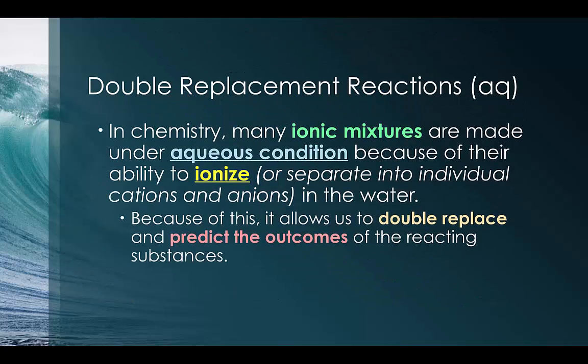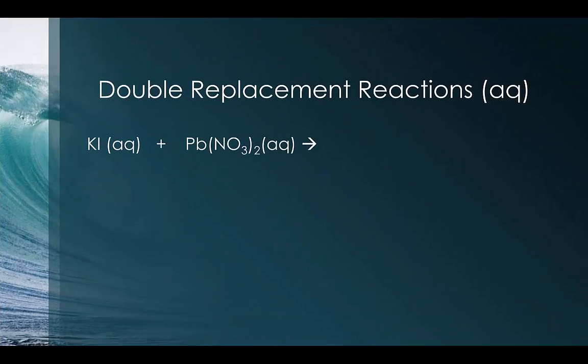In chemistry, many ionic mixtures are made under aqueous conditions because of their ability to ionize or to separate into individual cations and anions. Because of it, it allows for double replacement to actually happen, and we can predict those outcomes. So no matter what you put into a fluid, if it's ionic, it's going to form those ions that we just saw in the previous examples.